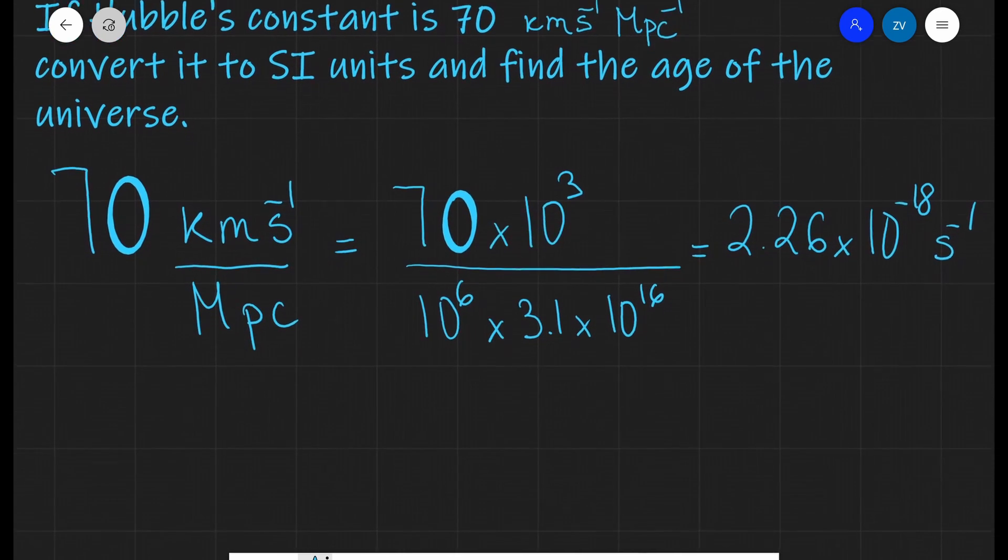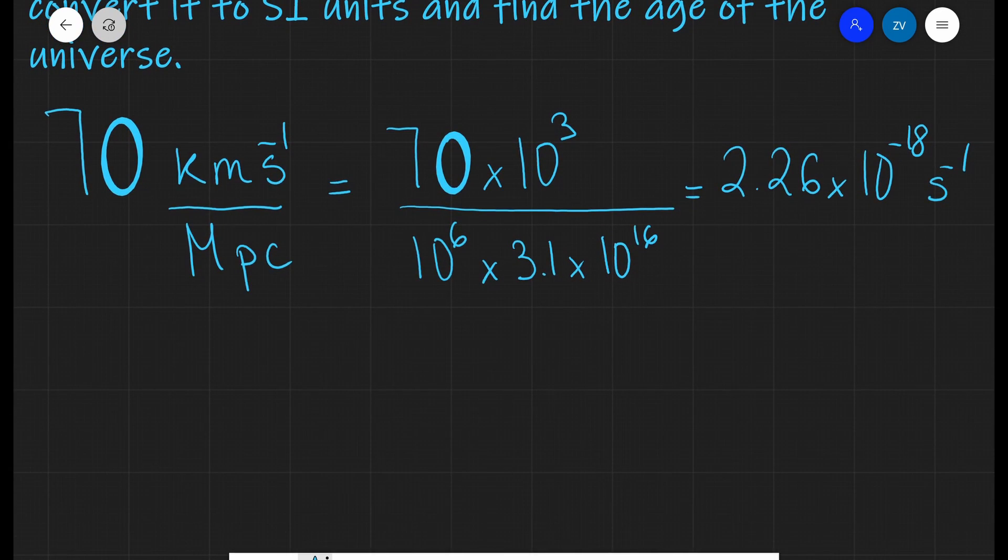If you remember from my previous video on Hubble's law, we said that Hubble's constant is actually equal to 1 over the age of the universe itself, which I'm just going to call t.